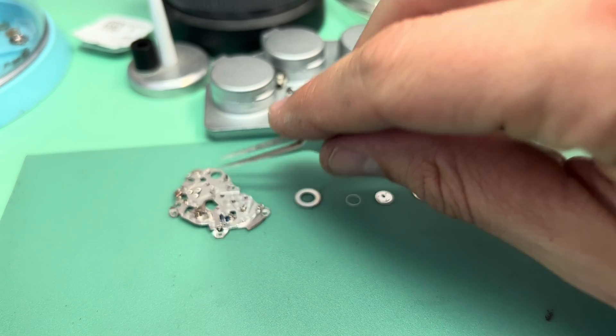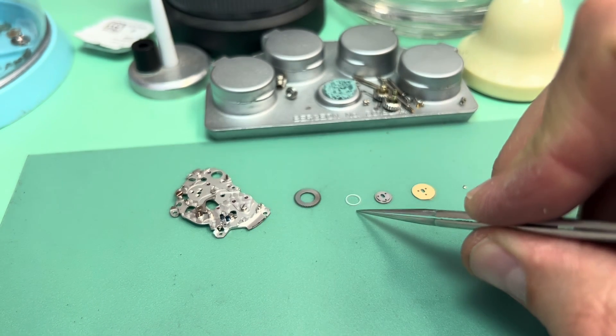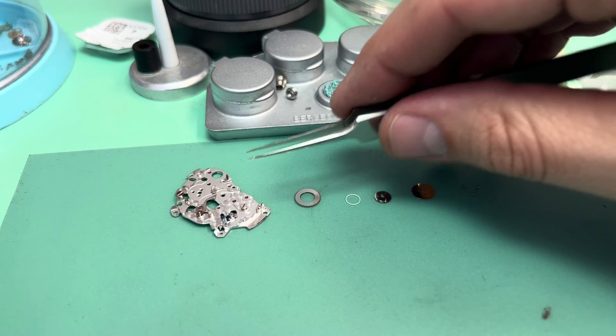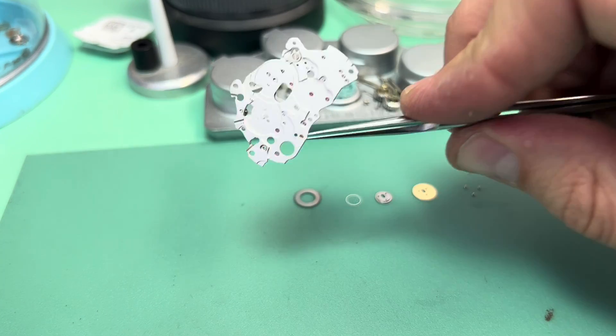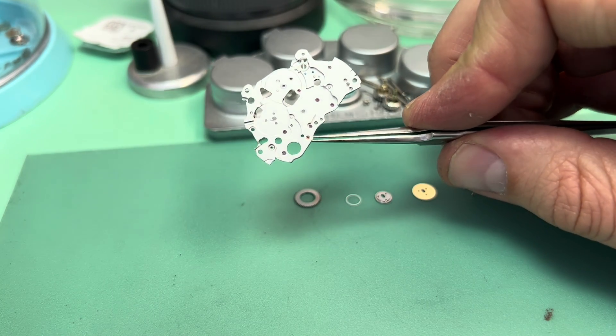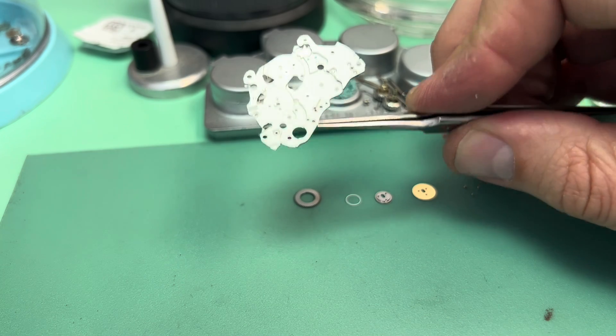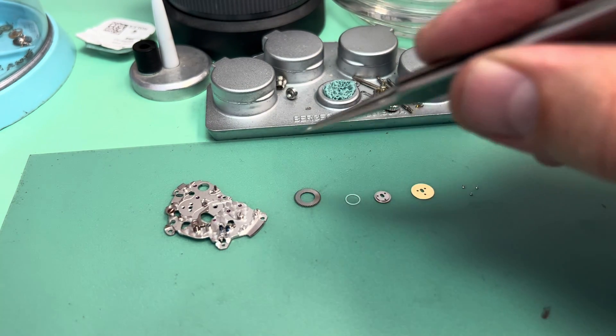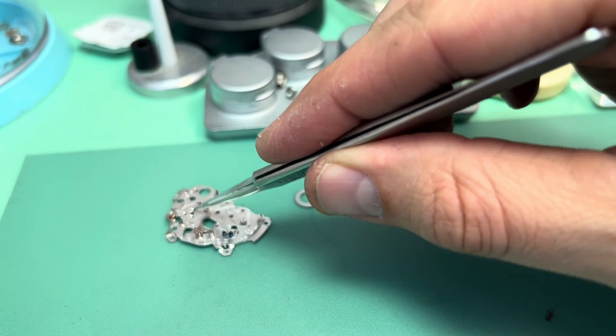This is the gear train bridge. And what we have here is the crown wheel with core assembly. Now, all these pieces fit underneath the gear train bridge. However, the screws are installed through the top.